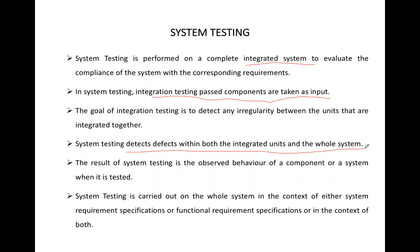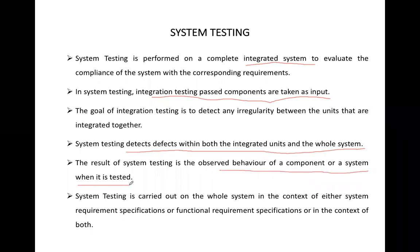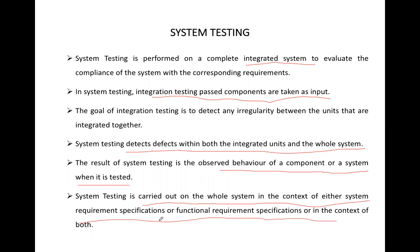Obviously, the solution will have multiple components communicating with each other, and some external components may also be used. In system testing, we combine all of them and test the complete system against the requirements. The result of system testing is the observed behavior of the component or system when it is tested. The main purpose of system testing is to check whether the system as a whole is doing what it is supposed to do.